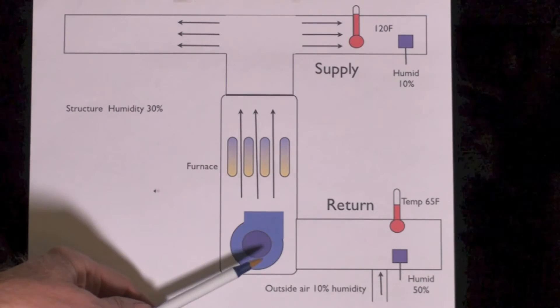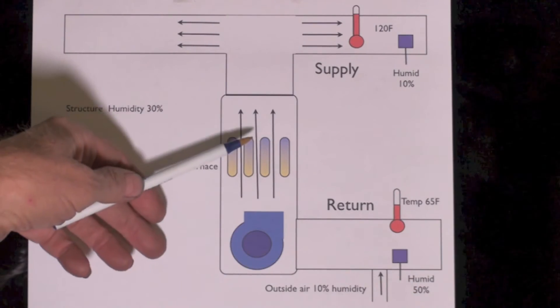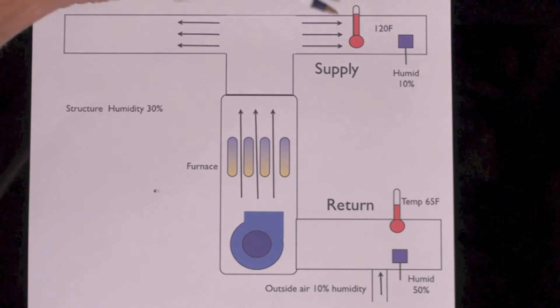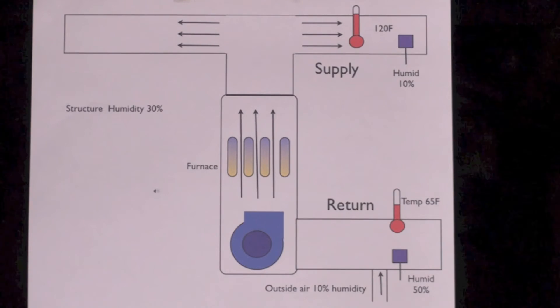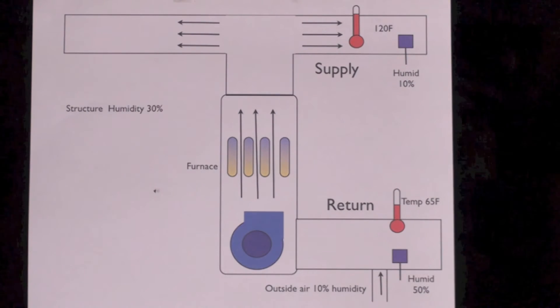Let's take this humidity as it goes through the system. Okay, at 120 degrees of duct temperature, my humidity may be 10%. It could be that low.